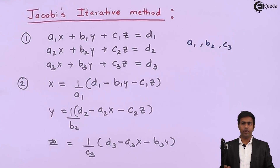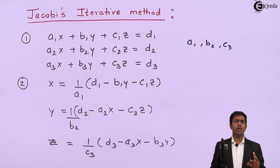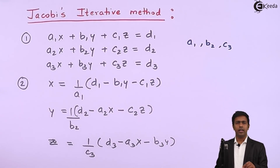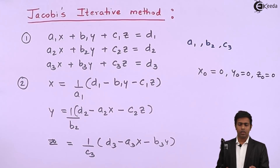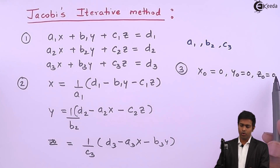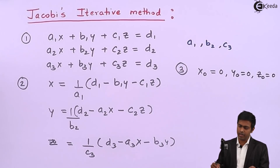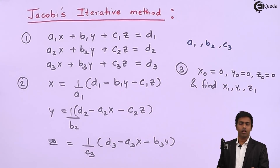In the iterative method we perform multiple iterations. To start the first iteration we must assume certain initial roots. We assume that x0 = 0, y0 = 0, and z0 = 0. By assuming these initial roots as zero, we start the solution and find the values of x1, y1, and z1 — which are the results of the first iteration.